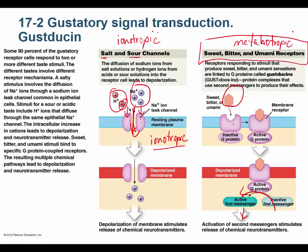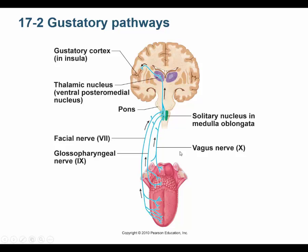These are the gustatory pathways. They go to the solitary nucleus in the medulla oblongata, then to the thalamus. Remember that olfaction did not go to the thalamus, even though 90% of all sensory input goes to the thalamus. Gustation does go to the thalamus. From the thalamus, it goes to the insula. If you were to stick your finger through the lateral fissure you would touch the insula — that's where you have the sense of taste.